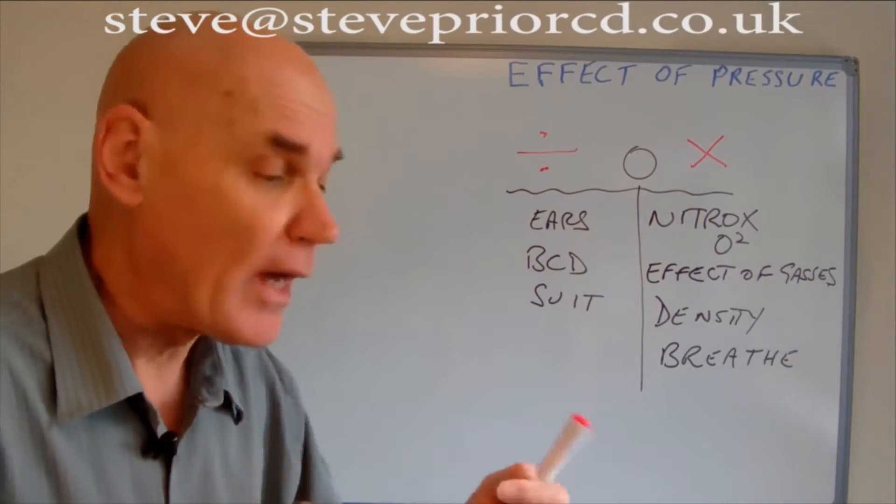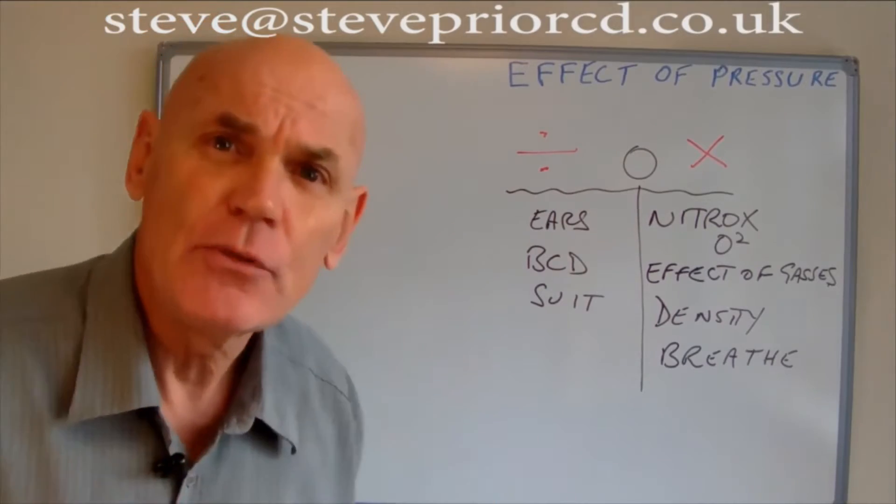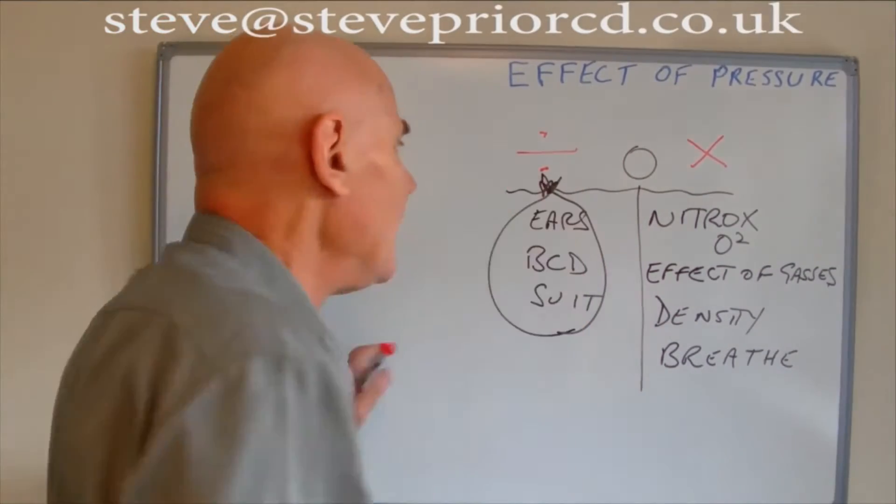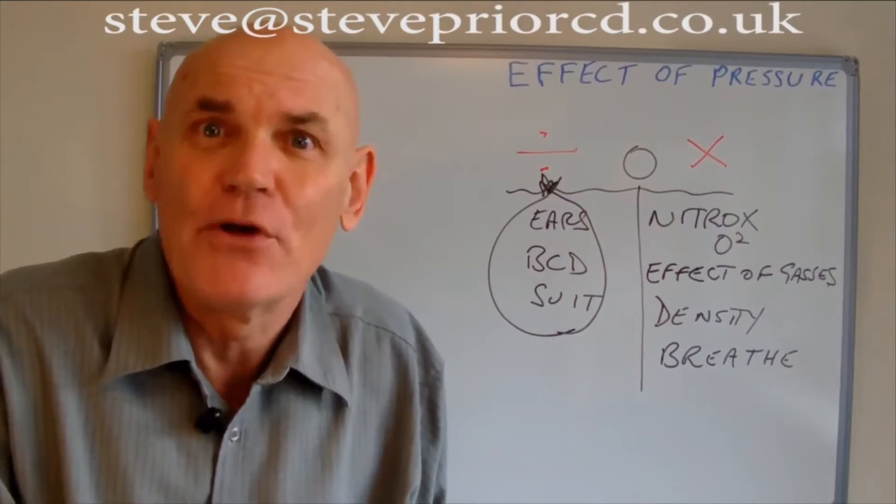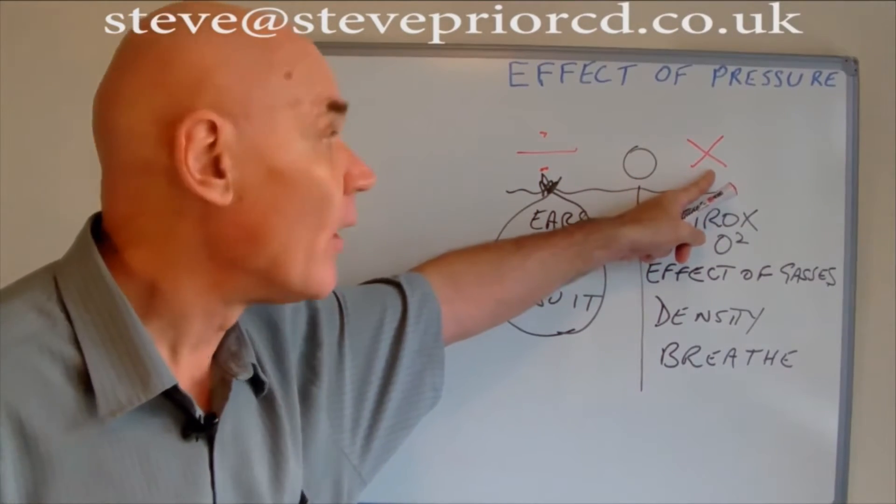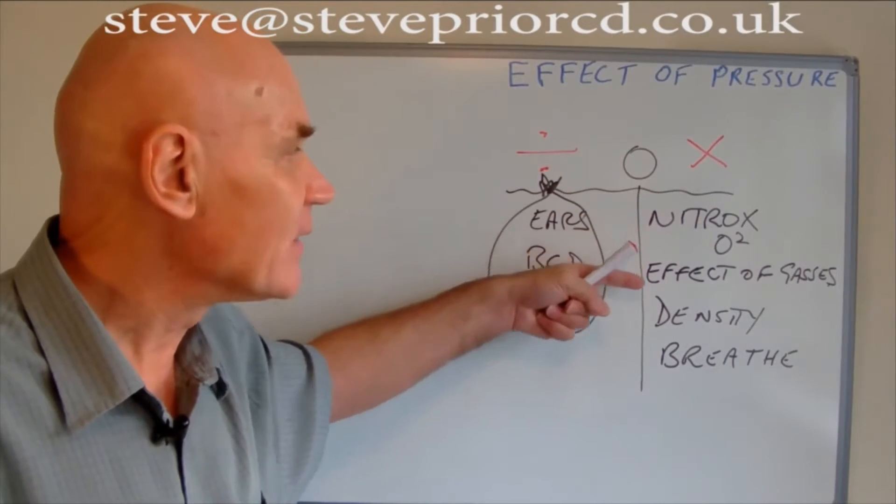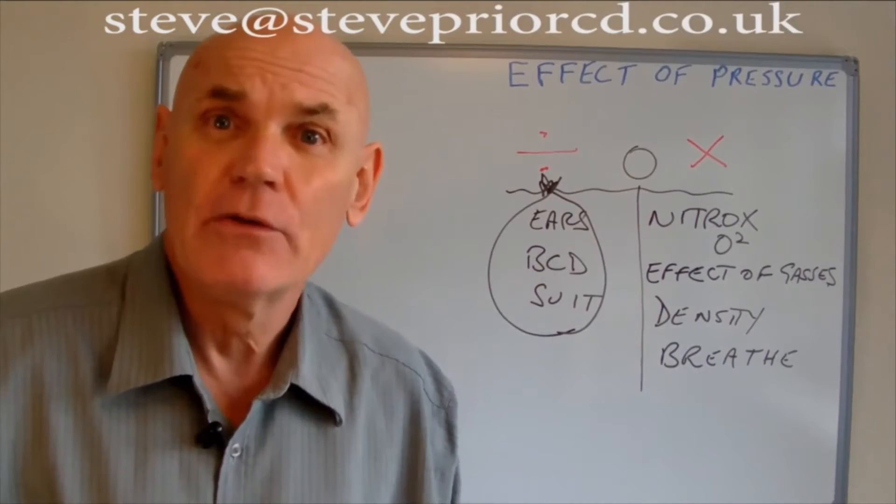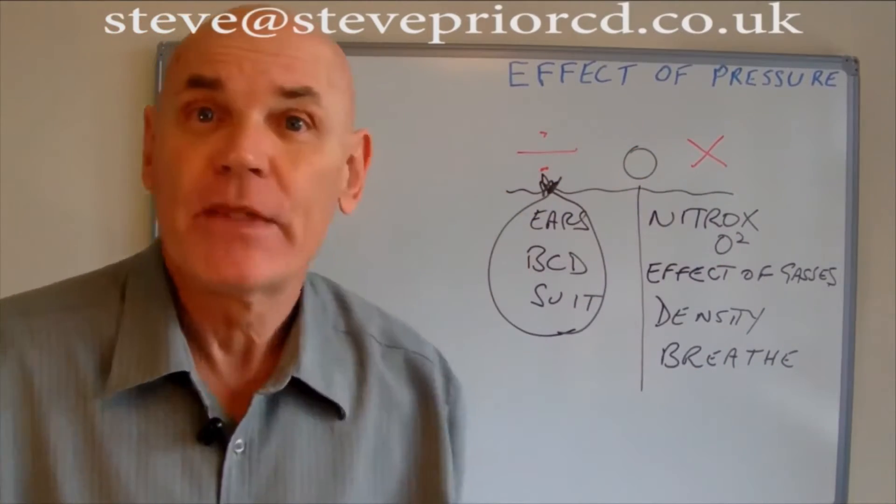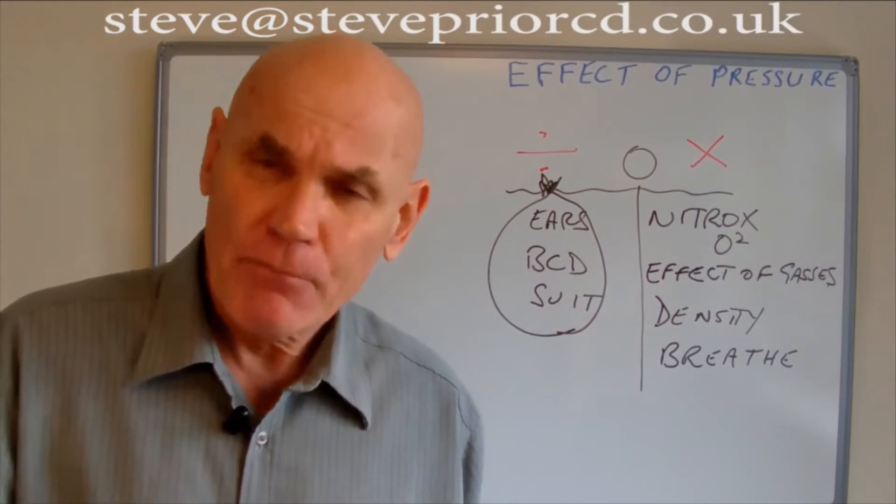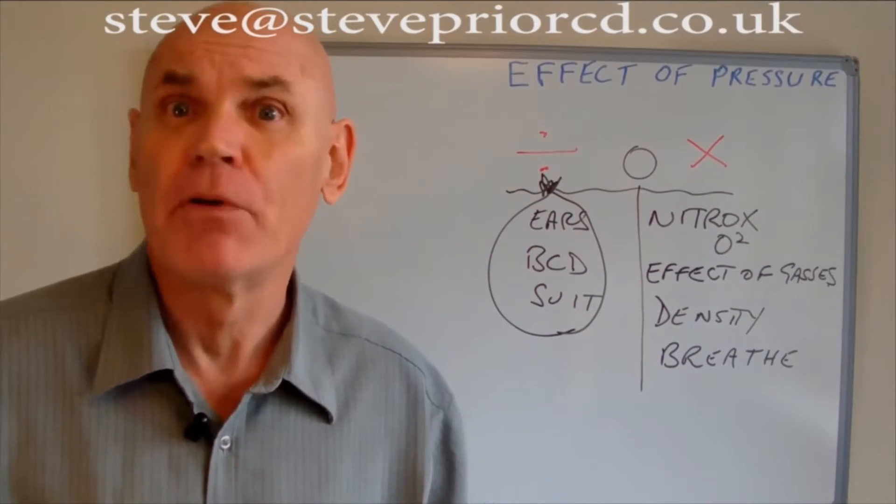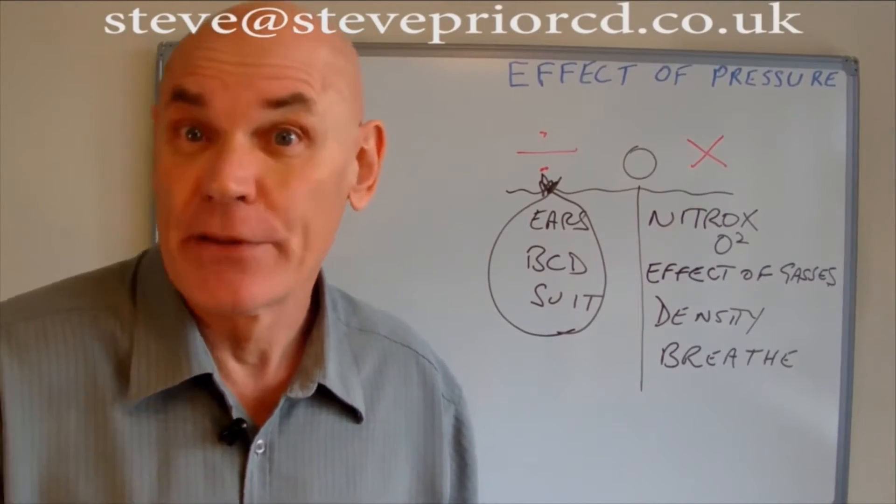If you think about it, we know these things - open water divers know all this stuff. Underneath the division sign of getting things smaller, have a look at this list: ears, BCD, suit - they're all to do with air spaces that are going to get smaller as we go underneath the water. I've lumped them all together with a balloon because a balloon is like an airspace. On this side, which is a greater symbol, a times sign multiply: oxygen, effects of gases, density, and breathing. We don't need to be a mathematician or physicist to know that these get greater, these get smaller. Once you've decided which is the correct sign, the mathematics are easy. I've got a great way to show you how to do this - I call it the box method. The best way to explain it is to use an example of a typical question.